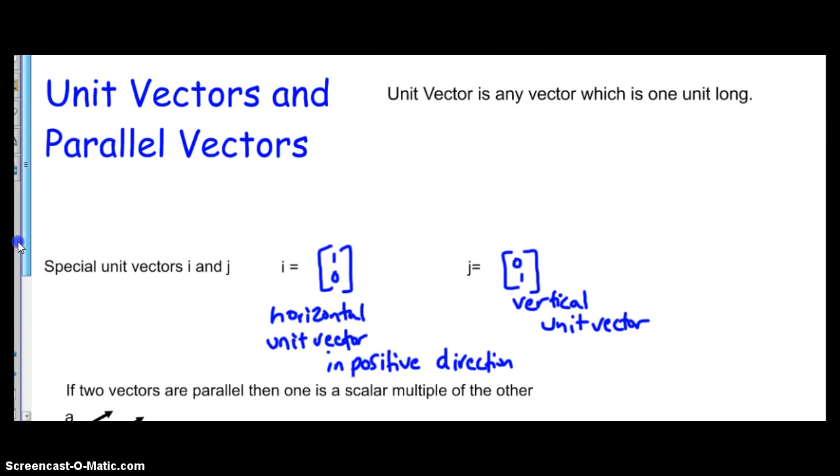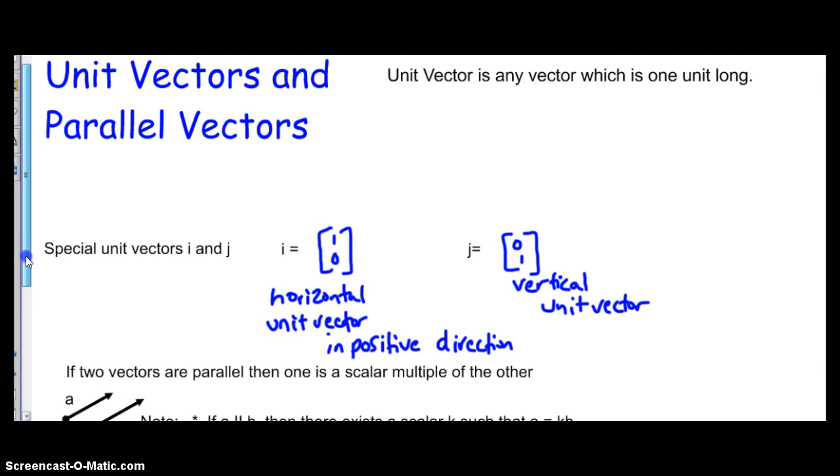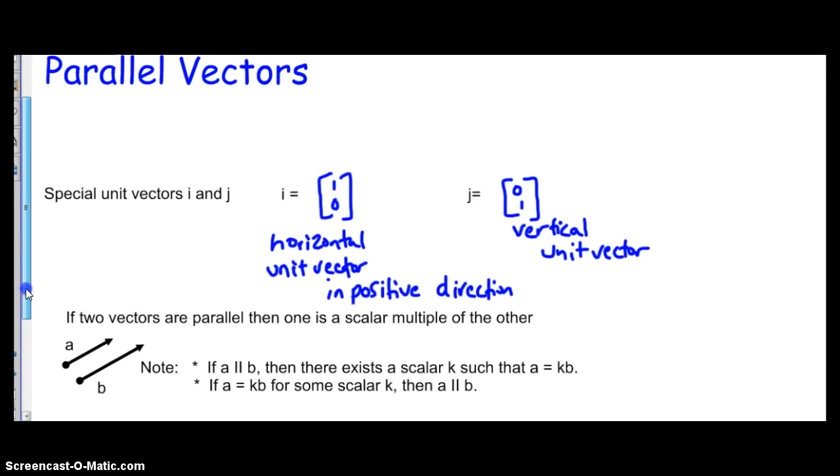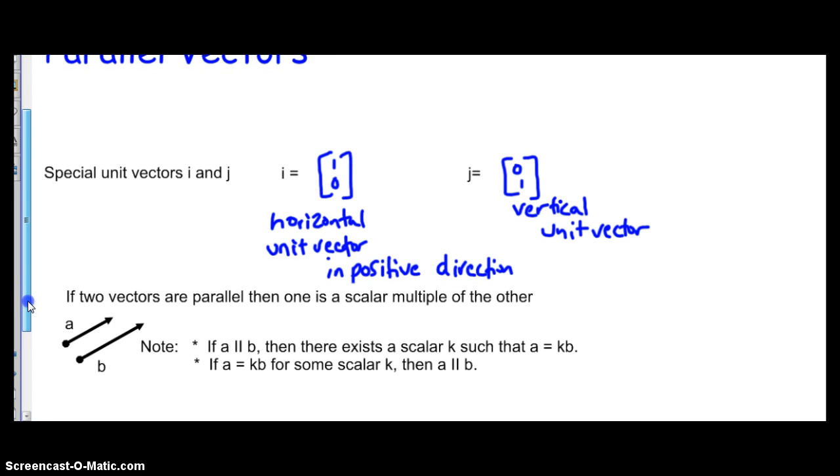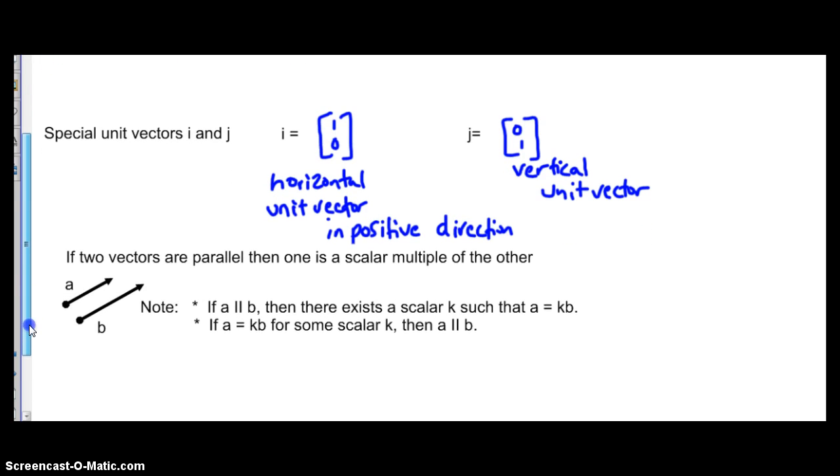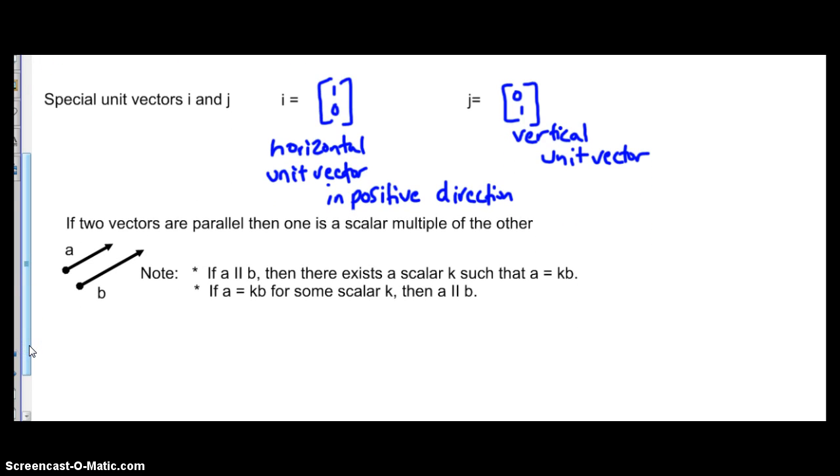We do need to know a few other things. The first one is a unit vector is any vector which is one unit long. Our special unit vectors I and J, they are unit vectors in the positive direction. Also, two vectors are parallel if one is a scalar multiple of another. Please write this definition down. We'll be practicing this in class. Have a great night.